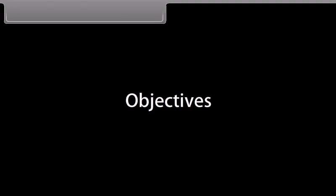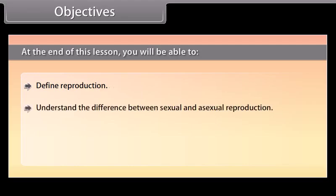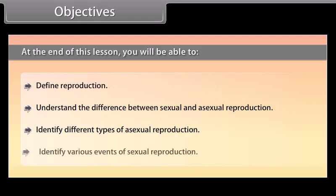Objectives. At the end of this lesson, you will be able to: define reproduction; understand the difference between sexual and asexual reproduction; identify different types of asexual reproduction; and identify various events of sexual reproduction.